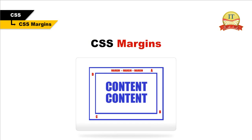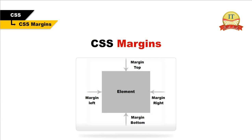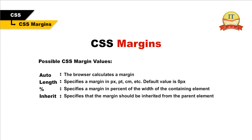CSS margins. Margins define the space around the element. CSS margins are specified in a similar way to borders — they can be set individually for each side or all sides at once. The top, right, bottom, and left margin can be changed independently using separate properties. Possible CSS margin values: auto (the browser calculates a margin), length (specifies a margin in pixels, points, centimeters, etc.; default value is 0 pixels), percent (specifies a margin in percent of the width of the containing element), and inherit (specifies that the margin should be inherited from the parent element).